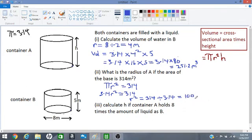But we want to find r. So therefore r would be the square root of 100. We have to take square roots on both sides and we will get 10 meters.